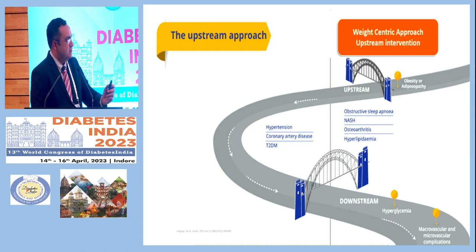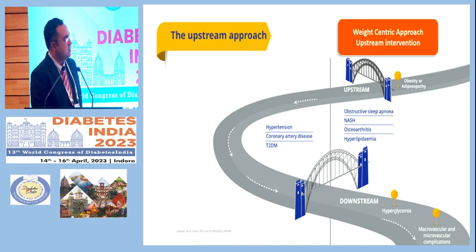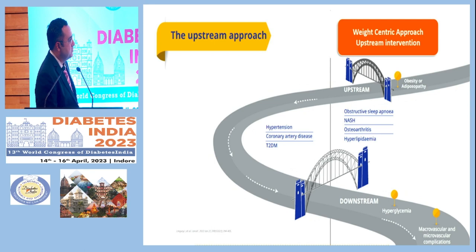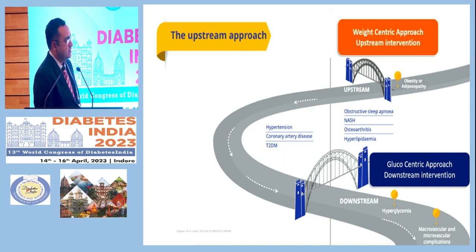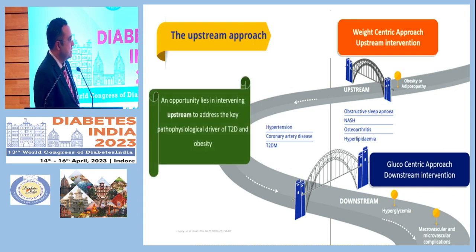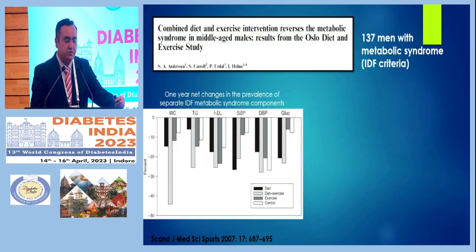I have taken this slide to mention the importance of a weight-centric approach or upstream intervention. This represents a stream of a river where we want to target upstream — obesity and adiposity as the core of the pathophysiology. The downstream complications include hypertension, coronary artery disease, Type 2 Diabetes, obstructive sleep apnea, NASH, osteoarthritis, and dyslipidemia. We don't want our patients to reach those complications. We want to use the upstream approach to intervene in the physiological drivers of Type 2 Diabetes and Obesity at the very beginning.